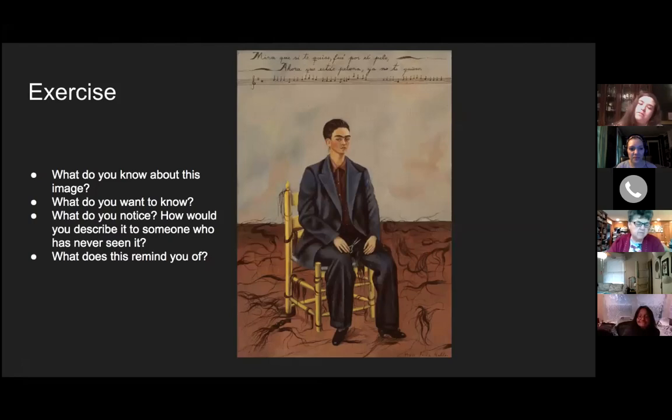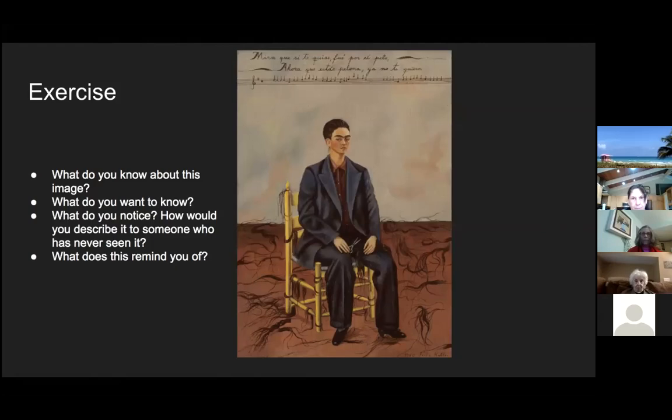What information do you think is missing? What do you want to know about the image? At what point in her life was this painted? It's 1940, but what was going on in her life in 1940? In 1940, she had just had a big fight with her husband Diego Rivera. He was always cheating on her — but she was cheating on him too. For her, this was the final straw and she had just divorced him, leading to a turning point in her career.